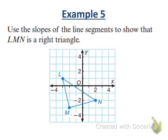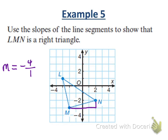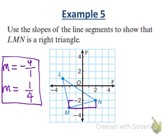Use the slopes of line segments to show that this figure is a right triangle. If it's a right triangle, two of its sides are perpendicular. The slope of LM: rise 4, run negative 1 — that's negative 4 over 1, or negative 4. The slope of MN: rise 1, run 4 — that's one-fourth. Negative 4 and one-fourth are opposite reciprocals, which proves the two line segments are perpendicular and therefore this is a right triangle by definition.